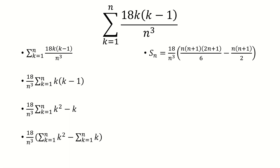The first sum will be a formula, which is n times n plus 1 times 2n plus 1 over 6. The second one is just n times n plus 1 over 2.